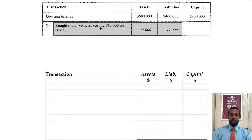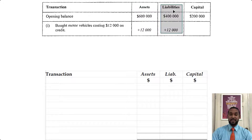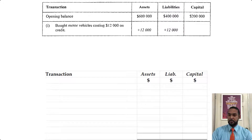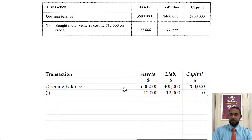Transaction one: bought motor vehicles costing 12,000 on credit. If you buy motor vehicles, your assets are going to increase, so you see a plus 12,000 there. If you buy it on credit it means you didn't pay for it, which means you currently owe money — so liabilities are going up as well. I started off with the opening balances: 600,000 assets, 400,000 liabilities, 200,000 capital. Six minus four is two, or four plus two is six — the accounting equation holds.